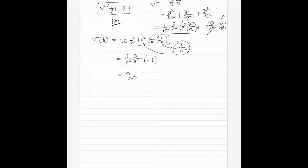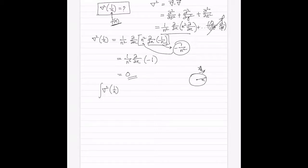We get zero for the Laplacian of 1/r, but the question is: is this consistent with every other situation we can imagine? For example, let's try to find the integral of ∇²(1/r) over a volume — say a spherical volume with r, theta, phi — and find the total Laplacian integrated over that volume.